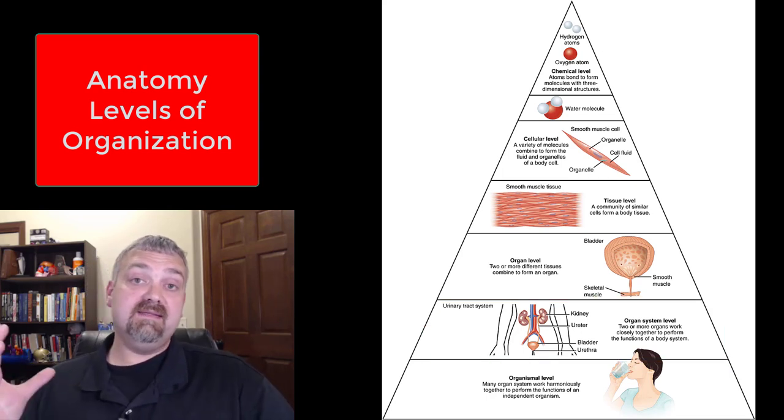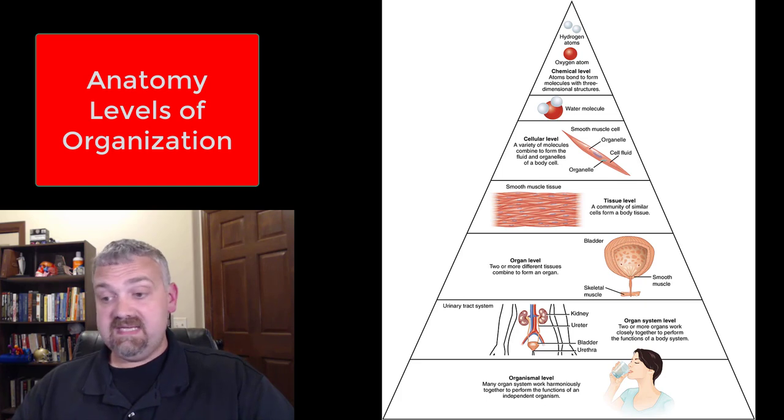So each human has 11 organ systems. We teach a total of 12 because we do separate the male and female reproductive system. They're quite a bit different. So that's the organ system level.